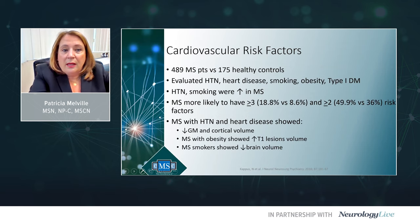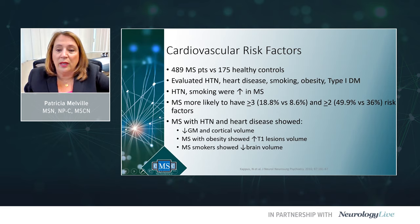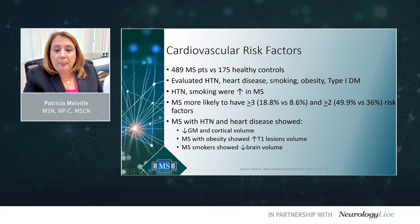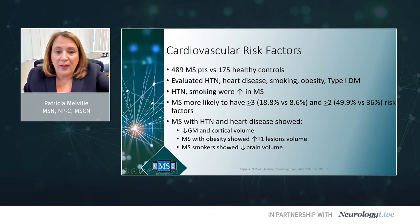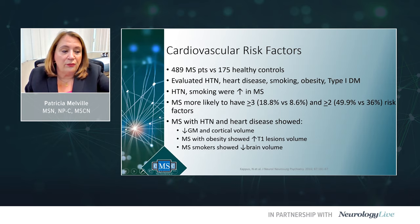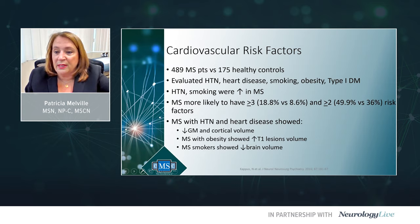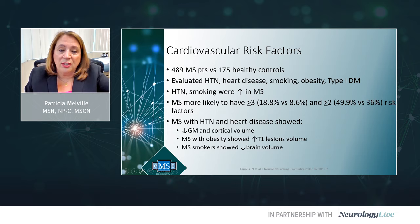A study of 489 MS patients versus 175 healthy controls evaluated hypertension, heart disease, smoking, obesity, and type 1 diabetes. Hypertension and smoking were elevated in MS. MS patients were more likely to have three or more risk factors — 18% compared to 8% in the general population — and two or more comorbidities — 49% versus 36% in the general population. Comorbidities also impact brain volume: hypertension and heart disease showed decreased gray matter and cortical volume, obesity was associated with increased T1 lesion volume, and smoking was associated with decreased brain volume.